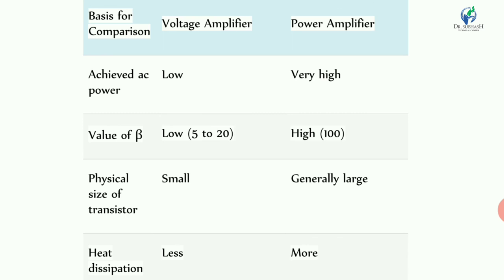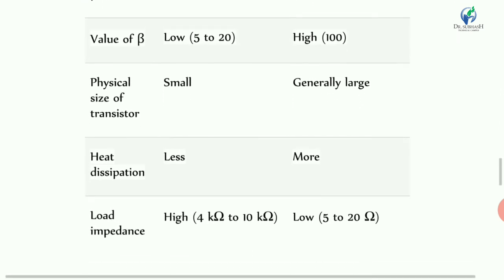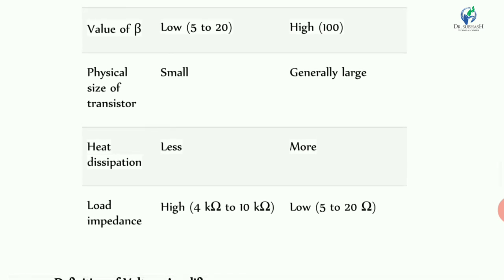For a power amplifier, the beta value is around 100. Regarding the physical size of the transistor: the transistor used in the power amplifier is physically larger compared to that used in the voltage amplifier. The power amplifier requires a bigger transistor to handle larger power dissipation.